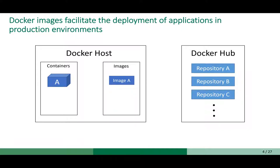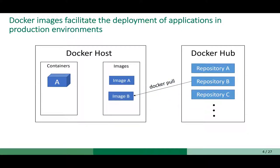Docker images facilitate the deployment of applications in production environments. By running just one command, you can get an image from a repository on Docker Hub on your machine. And by running another command, you can create a running container from that image. So it's very easy to use containers and images using Docker.